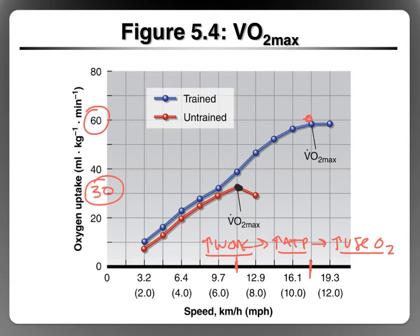That's key because the aerobic system is fatigue resistant. You may be able to run 11 miles an hour before training, but you would have to do this using primarily the anaerobic system, so you wouldn't be able to maintain it very long. But if you can do 11 miles an hour using the aerobic system, you're going to be able to maintain that level of intensity for a longer period of time than if you were just relying on the anaerobic system.